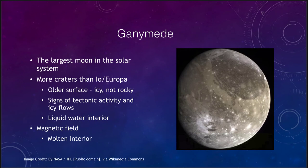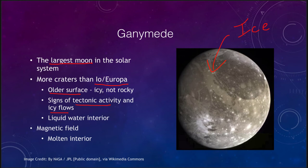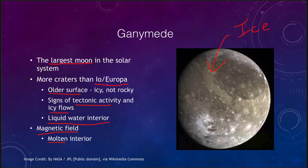Ganymede is the largest moon in the solar system. It is significantly more cratered than Io or Europa, giving it an older surface. Everything we see on the surface is ice. There are signs of possible tectonic activity and ice flows due to tidal interactions with Jupiter. Like Europa, Ganymede has a liquid water interior, giving us another place in the solar system with liquid water. Interestingly, Ganymede has a magnetic field, meaning something molten in its interior — possibly a liquid metal core or something in a slushy mantle — must be generating it.